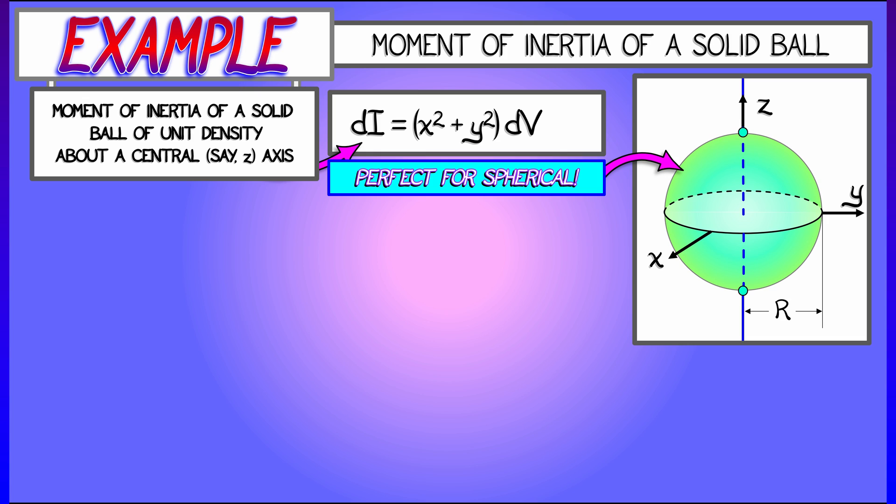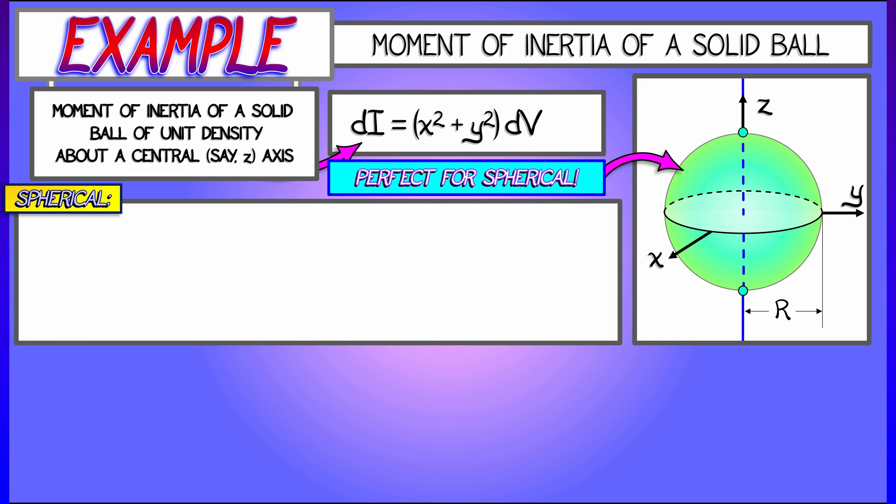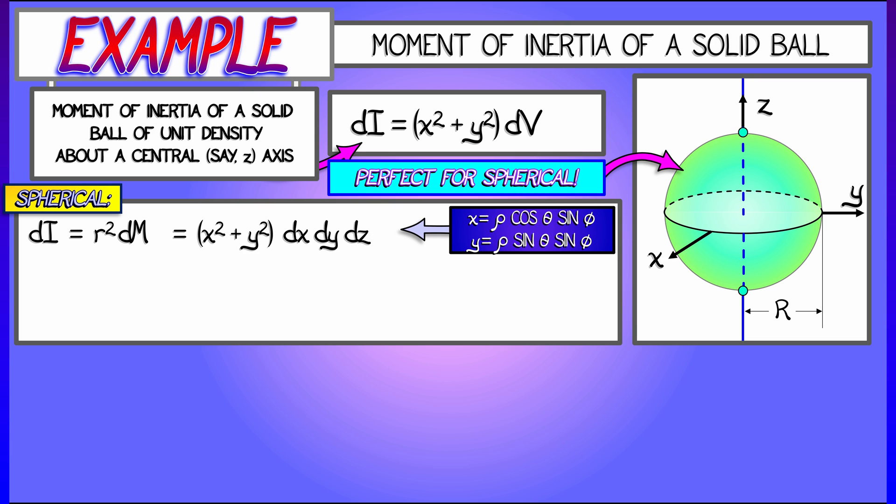The inertia element dI is going to be quantity x squared plus y squared dV. That's the distance squared to the z-axis. If I compute that inertia element substituting in x equals rho cosine theta sine phi and y equals rho sine theta sine phi, then I get that dI is quantity rho squared cosine squared theta sine squared phi plus rho squared sine squared theta sine squared phi times the volume element rho squared sine phi d rho d theta d phi.